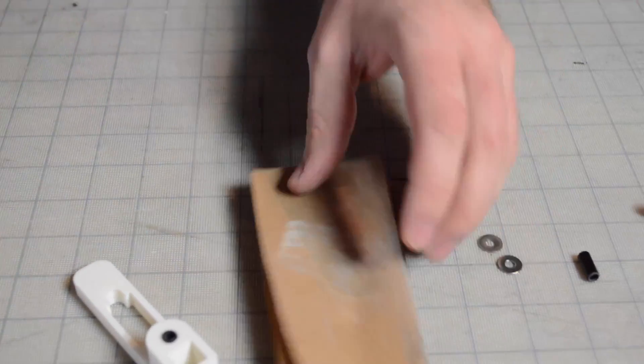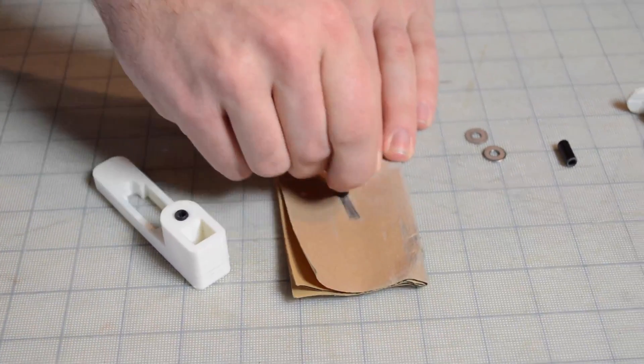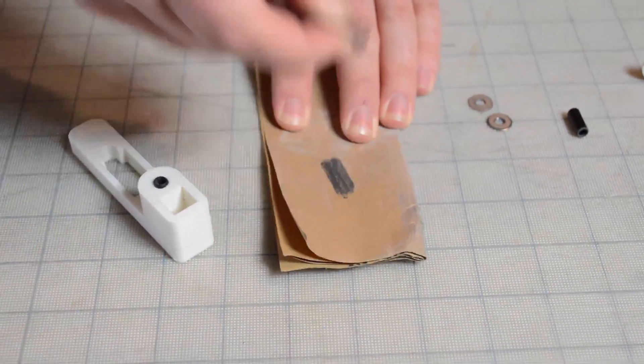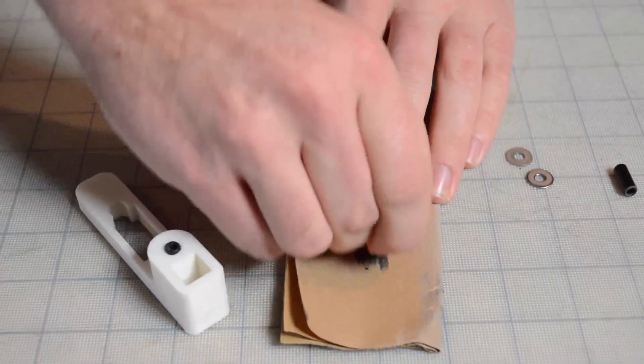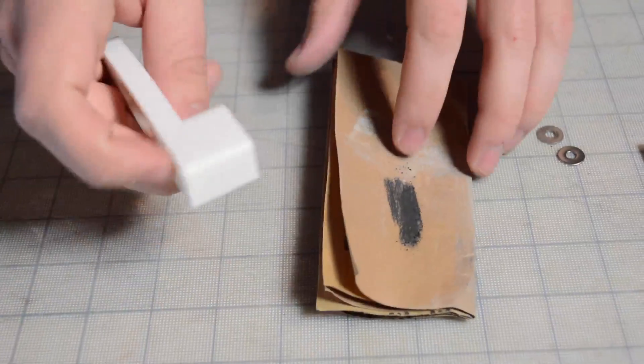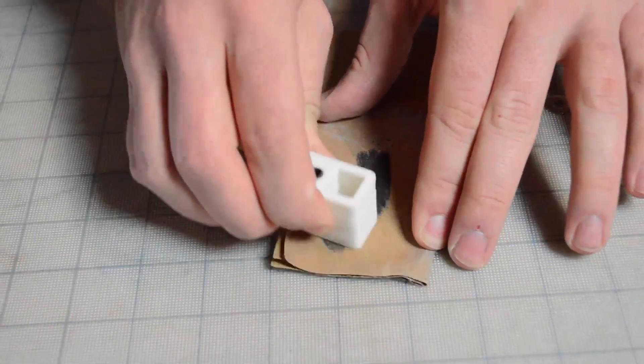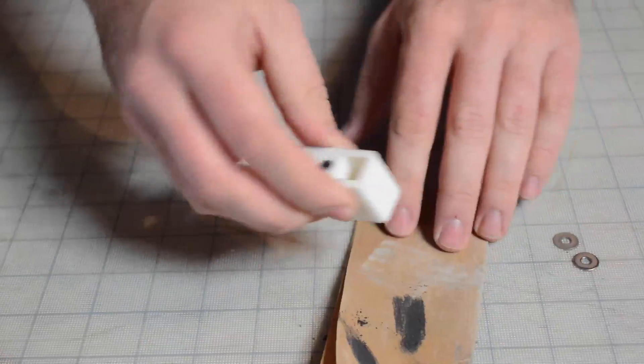Okay, so once everything is dry, I'm just going to clean up the end with a little bit of medium grit sandpaper so this is a little bit flatter, and then I'm going to flush up these pieces to the plastic.